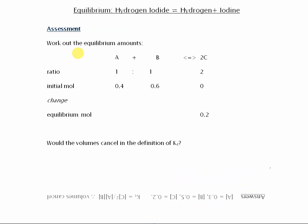OK, and finally, a small puzzle here. It says work out the equilibrium amounts, where you're given an equation, which is in a 1 to 1 to 2 ratio, and the initial moles you're given there, given the equilibrium mole of one of the substances. So you've been asked to work out the equilibrium amounts of A and B. And then would the volumes cancel in the definition of Kc here?